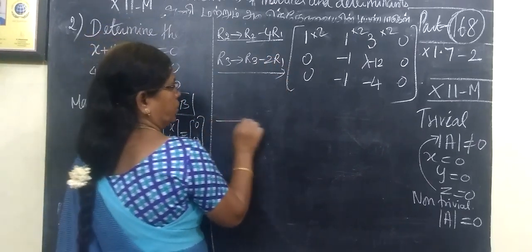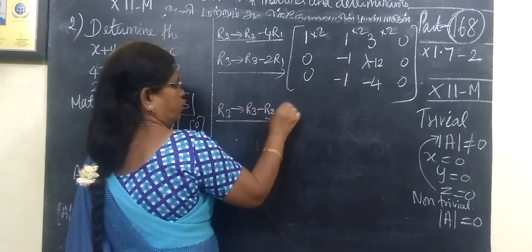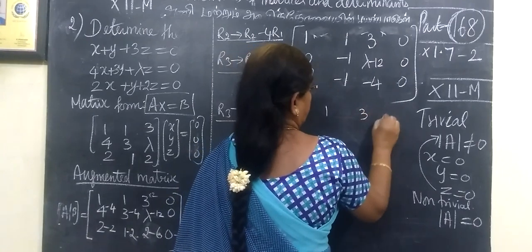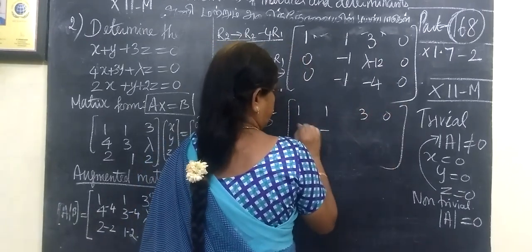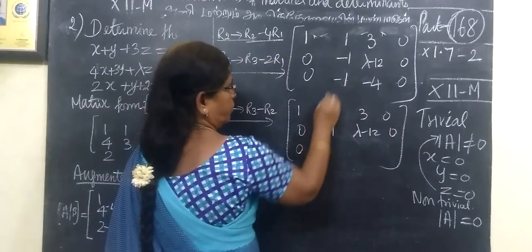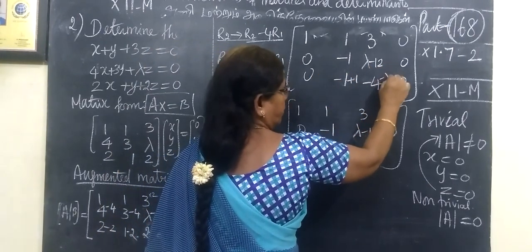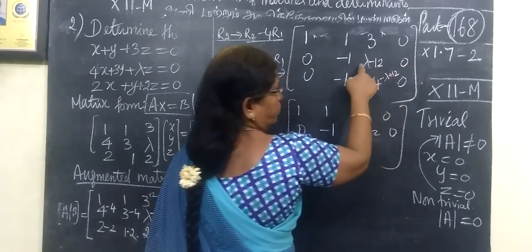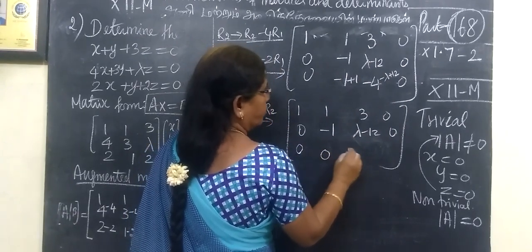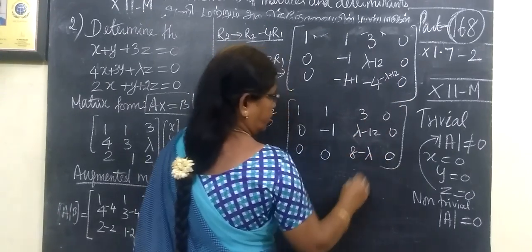This is elementary transformation. Next one is R3 gives R3 minus R2. So we have 1, 1, 3, 0, 1, minus 0, minus 1, lambda minus 12. Here is 0, then 0. This minus minus becomes plus. If it is minus, then minus lambda plus 12. So that is 0. Then minus 4 plus 8, so 8 minus lambda equals 0.